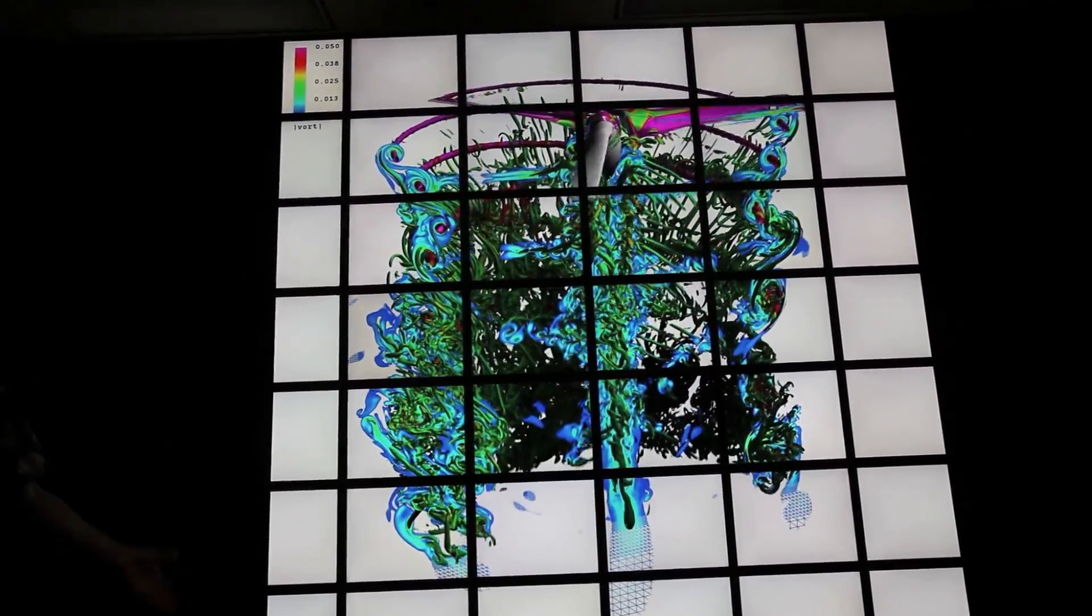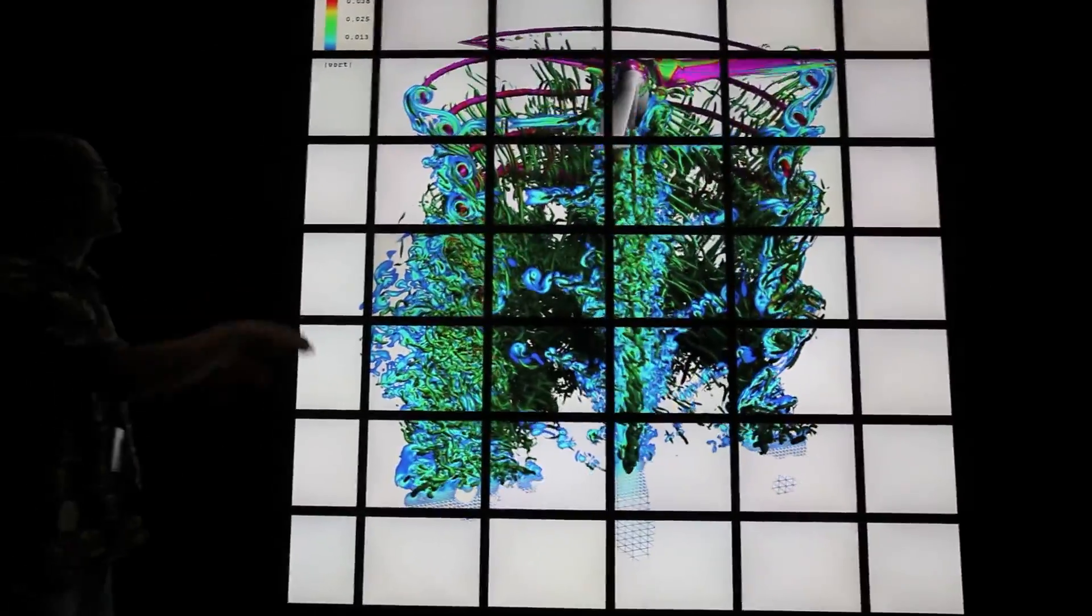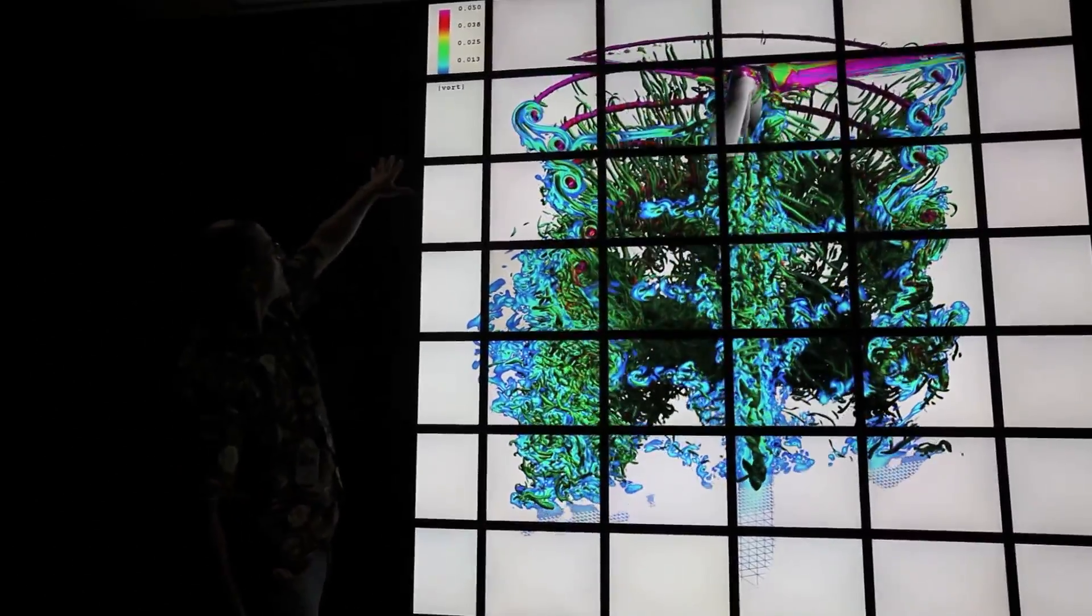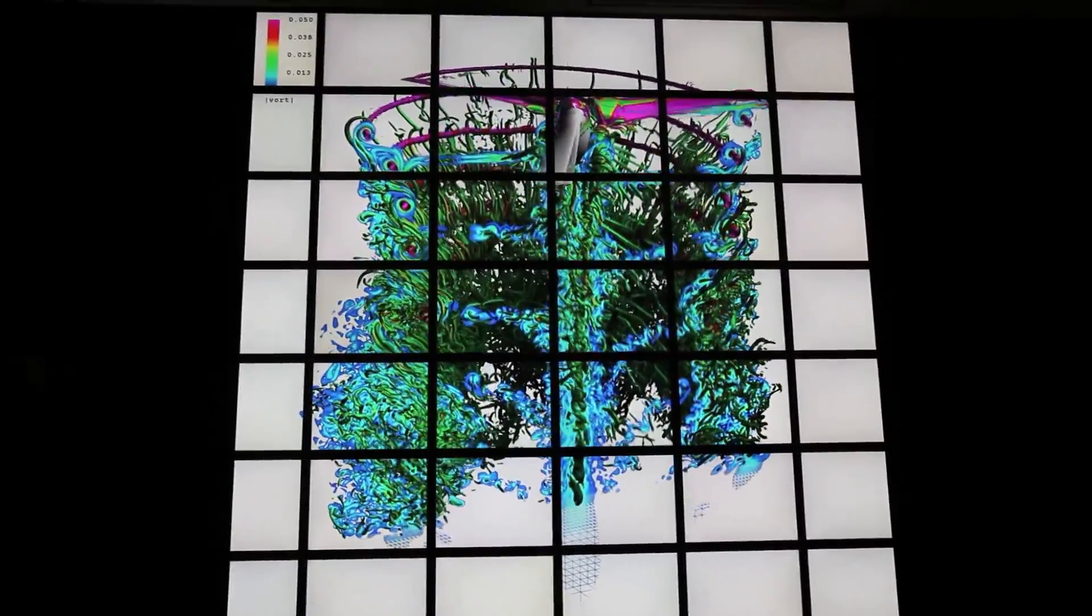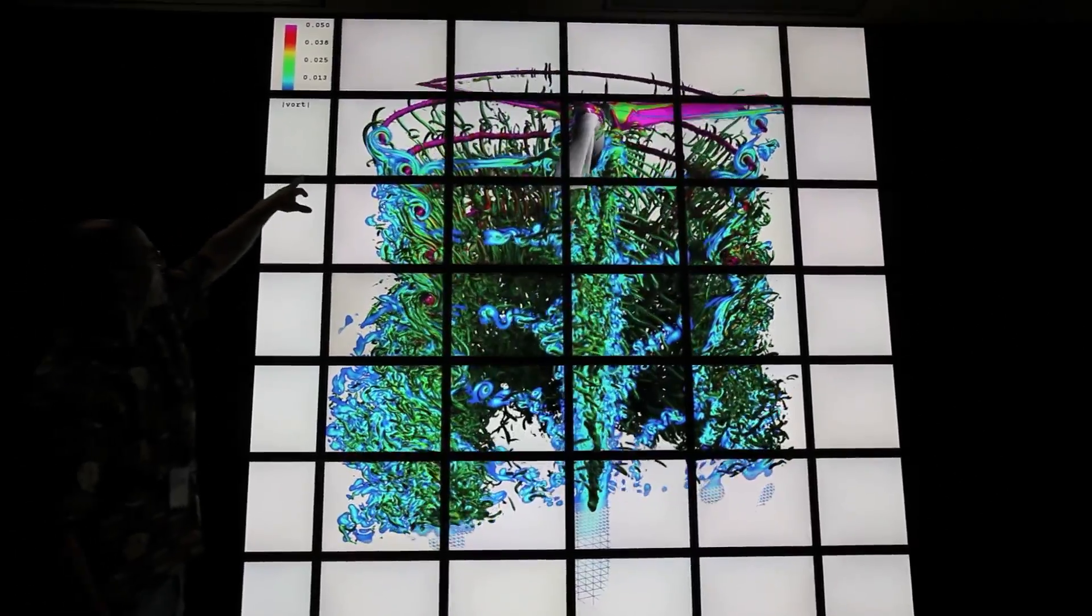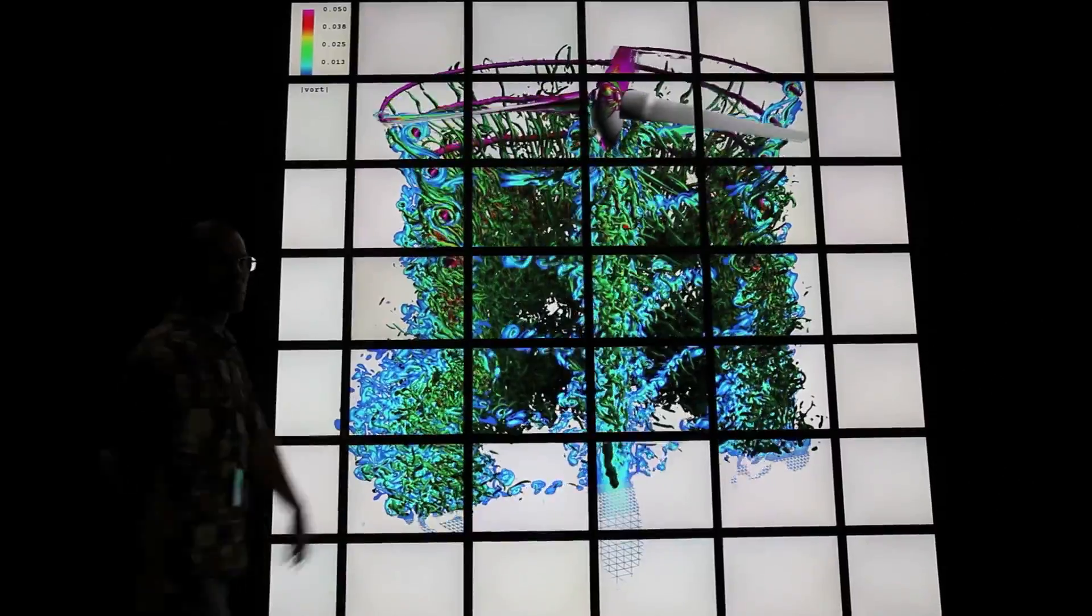We're identifying those through the Q criterion, if you're familiar with that. Then we're mapping onto the vortices another scalar quantity. In this case, the magnitude of vorticity. This basically gives us an idea of the strength of the vortex. These purple guys are the strongest. They're the blade tip vortices.